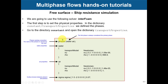To set up this case, everything is mostly the same, but we look at a new dictionary — the transport properties — which is a little different. Here we need to define the fluid properties for both phases. We have two phases, and you define them with the keyword 'phases', giving the names: water and air.